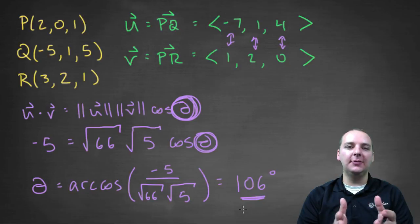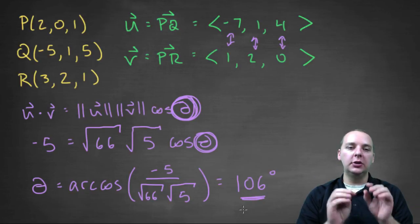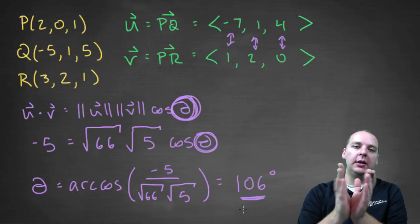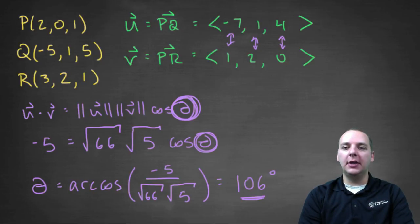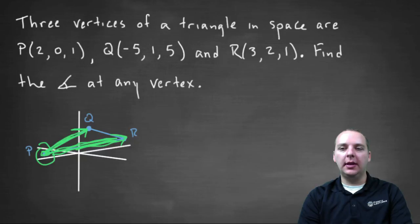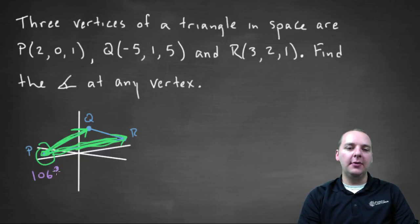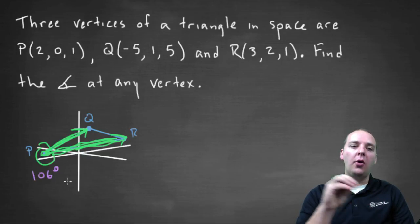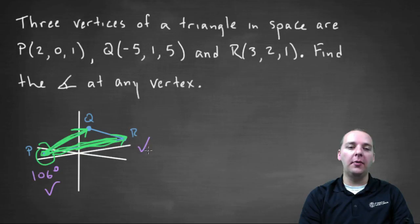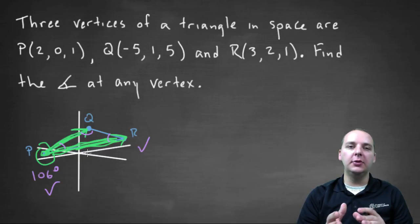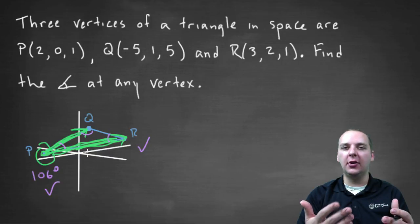So what that means is, even though I can't see these vectors easily because they're in three-dimensional space, just using the formula I know the angle at vertex P — between vectors P to Q and P to R — is about one hundred and six degrees. Now, if your instructor asks you to find the angle at all three vertices, you can cheat a little bit. You'd do the full work for P and likely for R as well, but don't forget that the sum of the three angles in any triangle is one-eighty. So once you find the first two, you can subtract their sum from one-eighty to get the third one essentially for free.